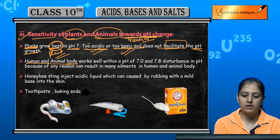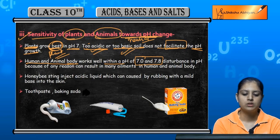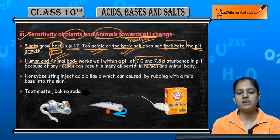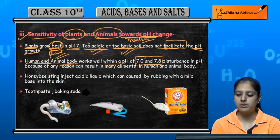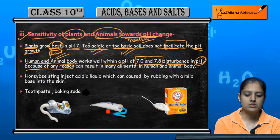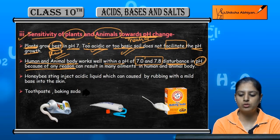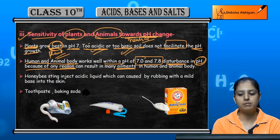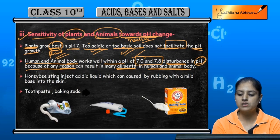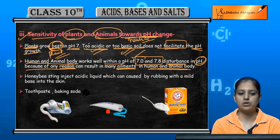The human and animal body works well within a pH of 7 to 7.8. If there is a disturbance in pH for any reason, there are many ailments in the human and animal body. So the best pH range is 7.0 to 7.8 — almost neutral.